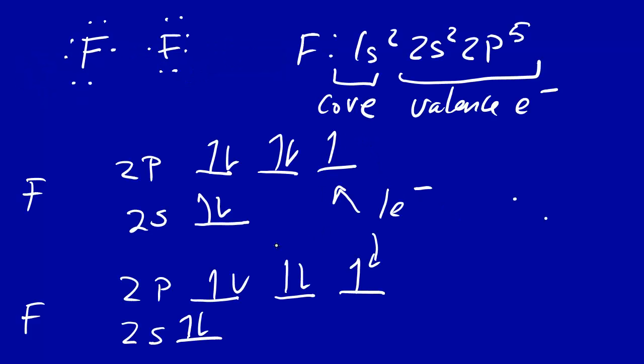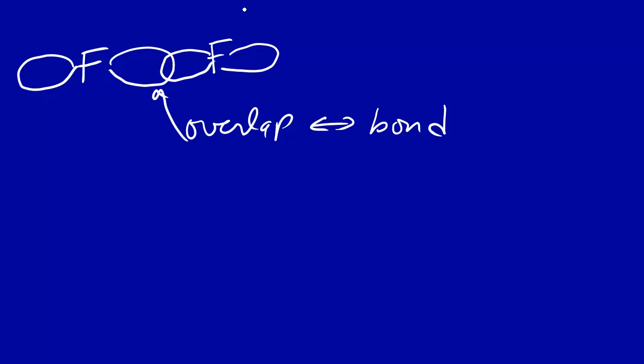Looking at it another way: for the fluorine molecule, we draw the p orbital with one electron on each fluorine. There is overlap between these p orbitals, and that overlap corresponds to a bond. One electron from each fluorine combines to give two electrons, forming the covalent bond. In a nutshell, valence bond theory is the overlap of atomic orbitals — one on each atom — to form a bond between the two atoms.